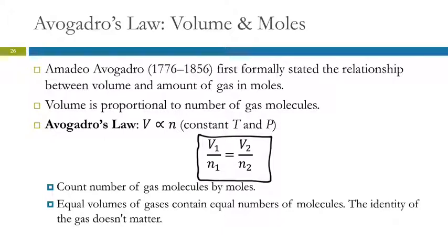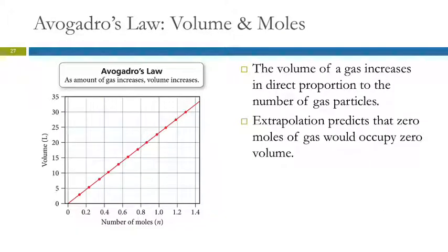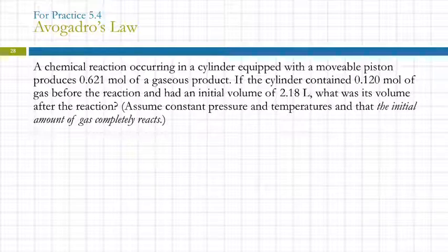So instead of counting individual gas molecules, we use the counting unit mol, 6.022 times 10 to the 23rd particles. Equal volumes of gases contain equal numbers of molecules. That's not true of liquids and solids. If you have two gases, same volume, same temperature, they're going to have the same number of particles. Here's an illustration of Avogadro's law, graphing volume versus number of moles. Get a nice linear relationship. If we extrapolate this data to zero, we find that we have a prediction that zero moles of gas would occupy zero volume. That makes sense, right?